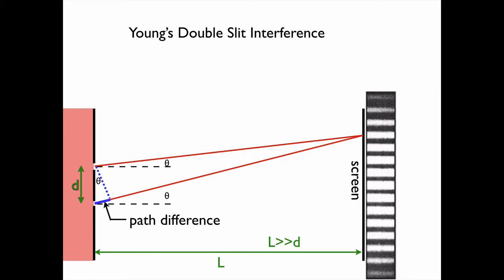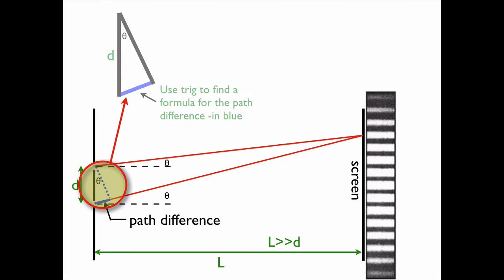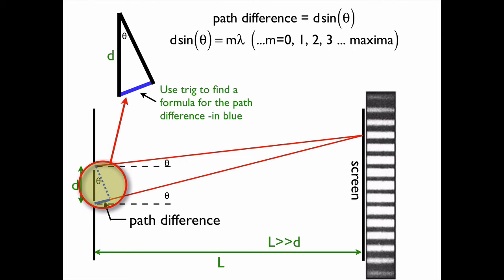It's just going to be the hypotenuse and the angle and the opposite side, so that's going to be the sine function. The path difference is d sin θ. So d sin θ is equal to mλ, where λ is the wavelength and m is an integer. Whenever you're off by a wavelength - one wavelength, two wavelengths, three wavelengths, four wavelengths, et cetera - the waves all match up and you get a bright spot.